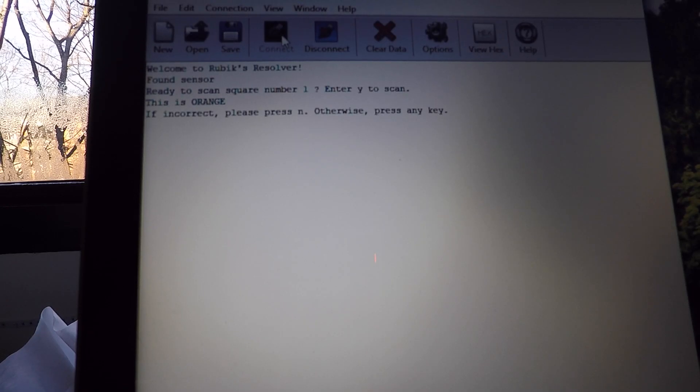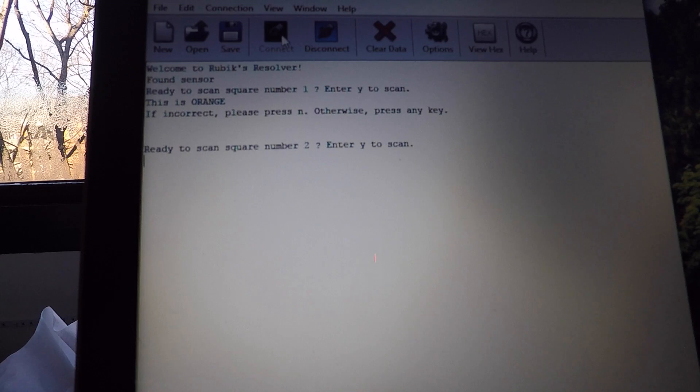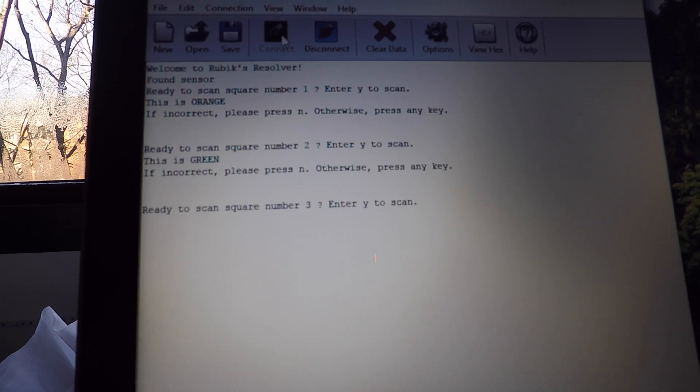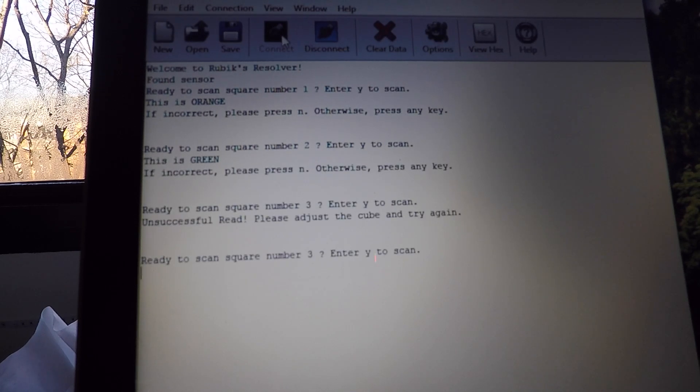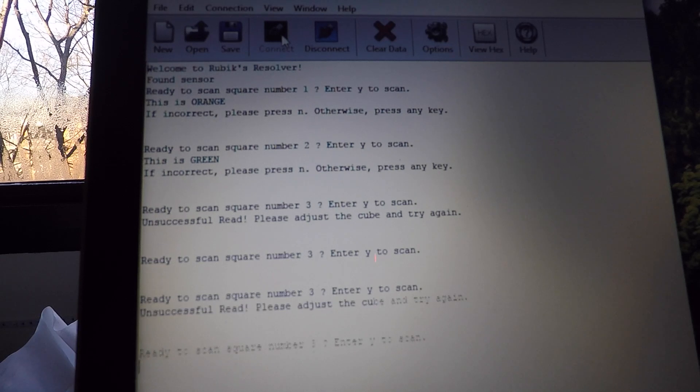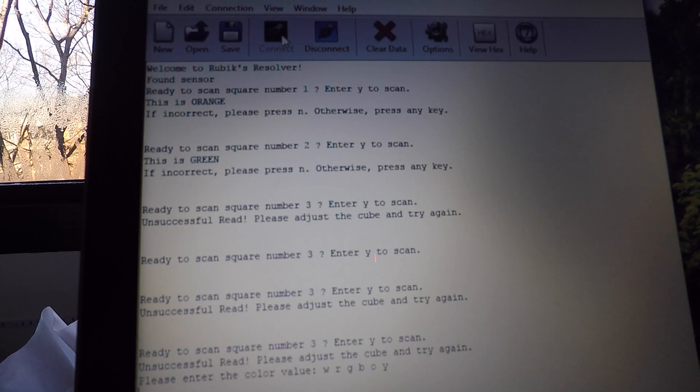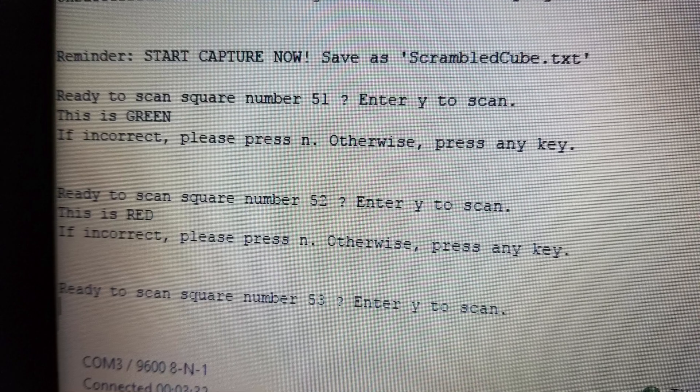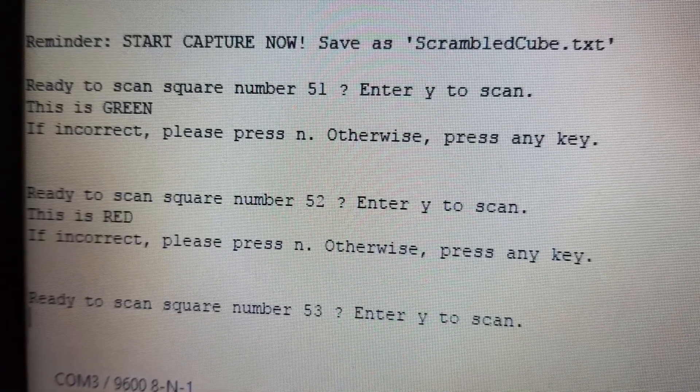Coolterm is an application that allows you to read in from the Arduino serial port and interact with it. Because the RGB sensor is not perfect, you can manually change the values that it reads in if it's incorrect or not successful. Coolterm will save the color values as a text file.